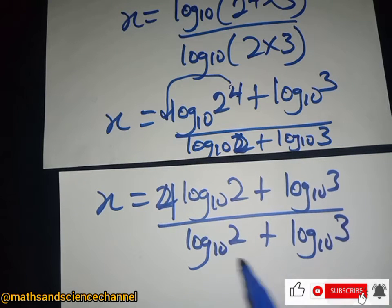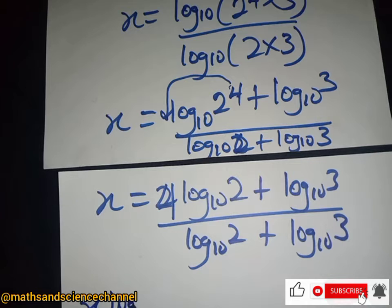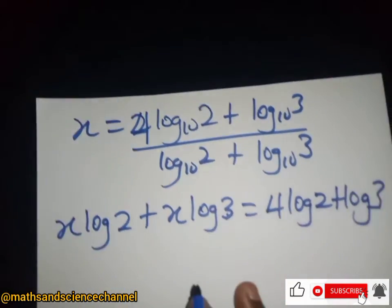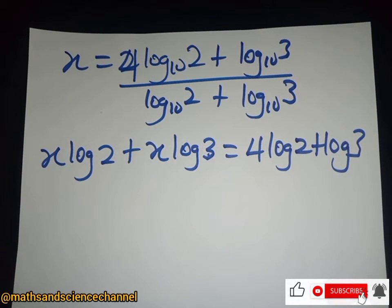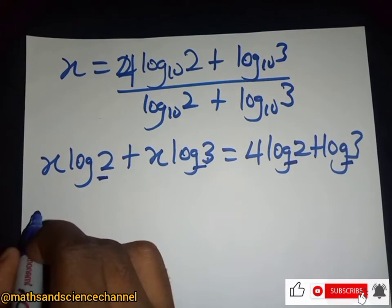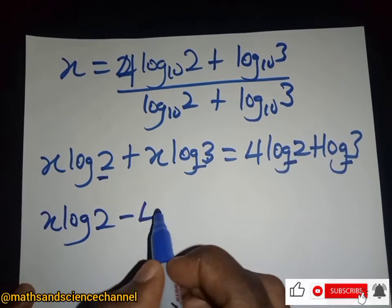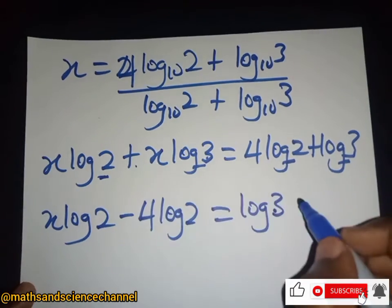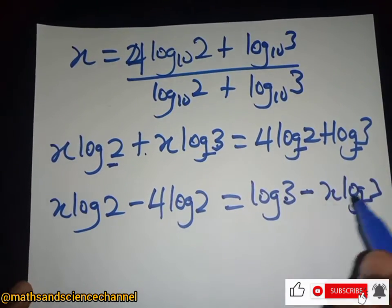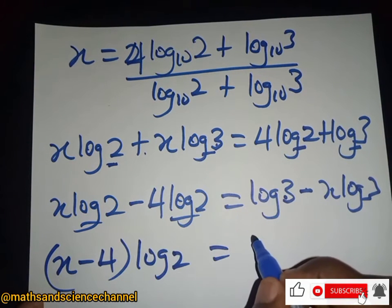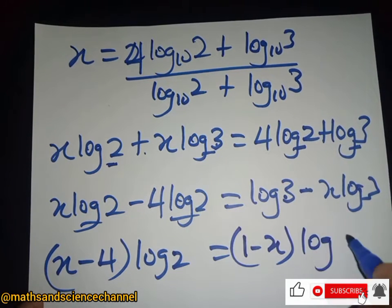So all of this multiplies x. We get x times (log 2 plus log 3) equal to 4 log 2 plus log 3. Now we group like terms: x log 2 minus 4 log 2 equals log 3 minus x log 3. Factorizing gives (x minus 4) log 2 equal to (1 minus x) log 3.